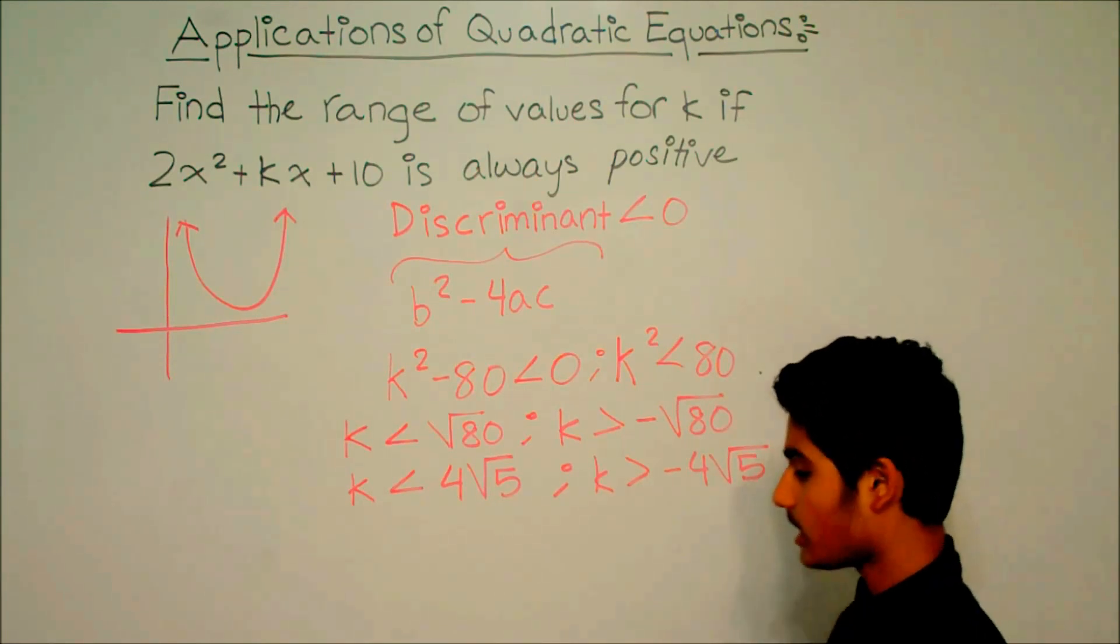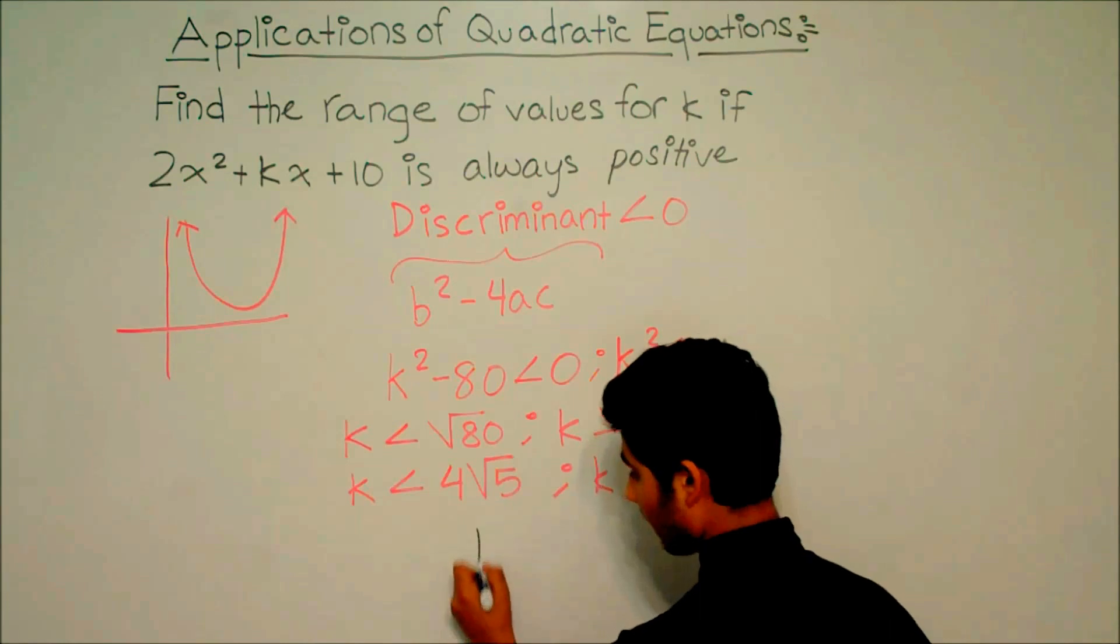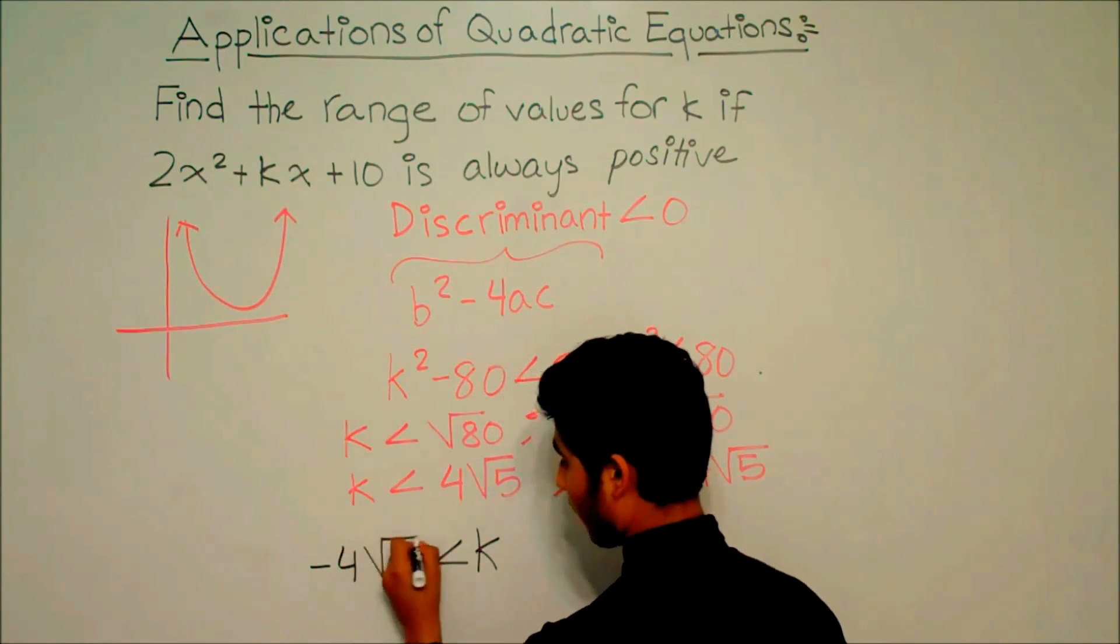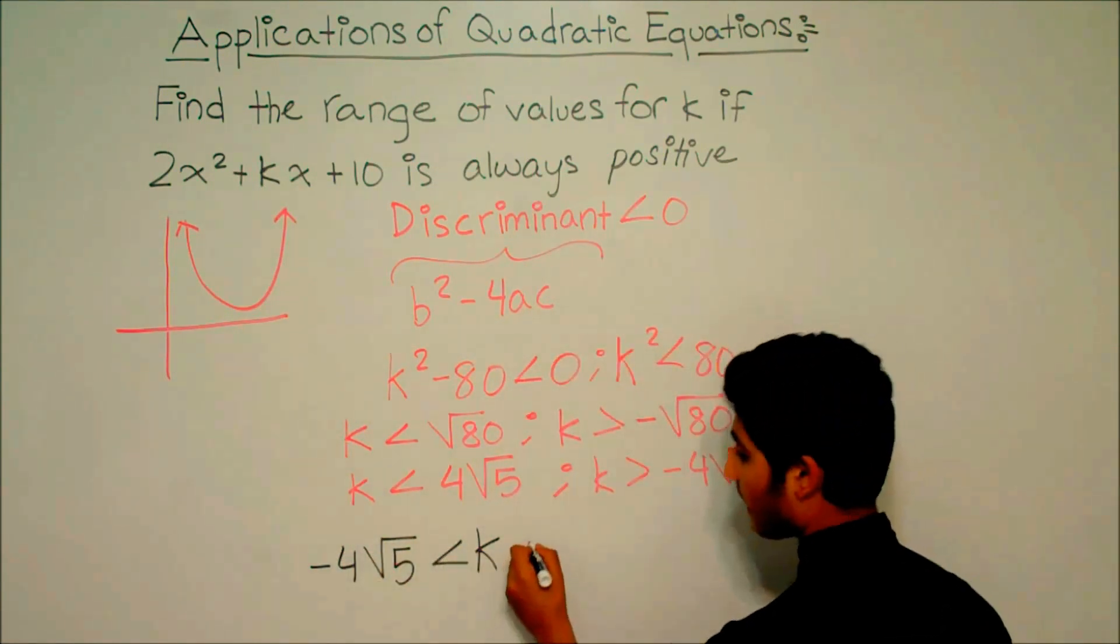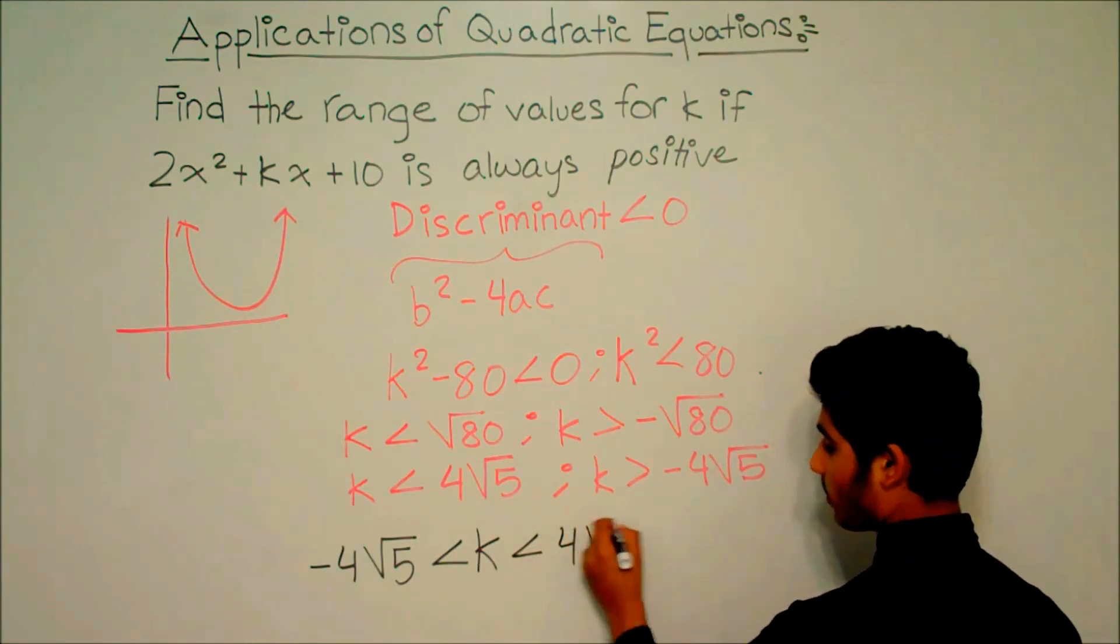So the answer to this problem is k is greater than -4√5, and k is less than 4√5.